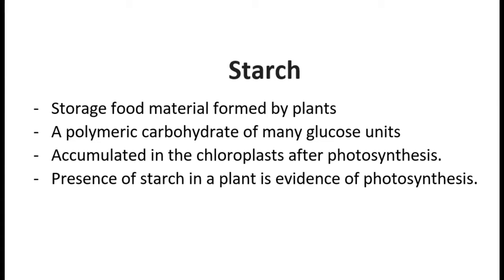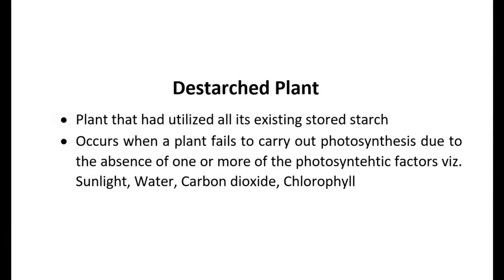If a plant is stripped of any one or all of the vital factors necessary for it to carry on photosynthesis, then photosynthesis immediately ceases to occur in that plant. As a result, the plant starts utilizing its existing reserve food stored in the form of starch. Eventually the plant would have used up all its remaining stored starch and become what is known as a de-starched plant. A de-starched plant cannot remain alive for long unless it is resupplied with the vital factors necessary for photosynthesis to occur.